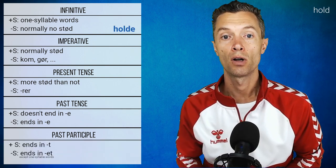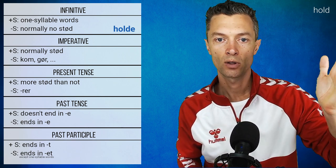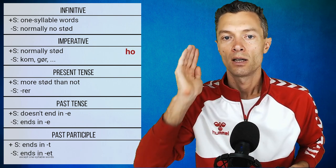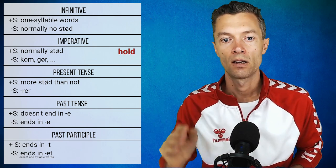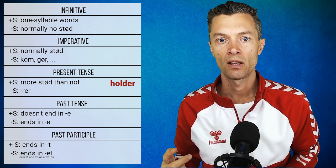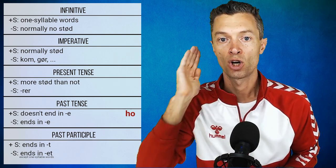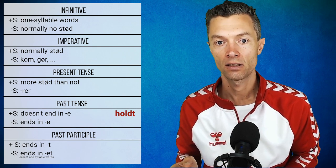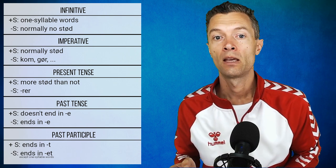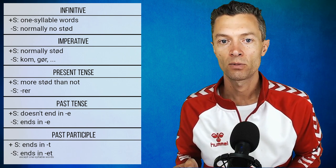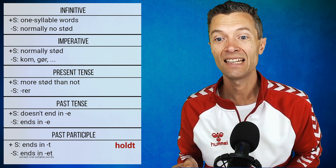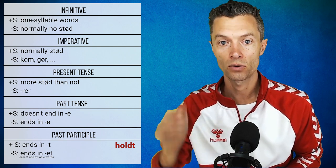Now let's look at the verb 'holde'. Infinitive 'holde' — normally no stød when ending in -e. Imperative 'hold' — with stød. Present tense 'holder'. Past tense 'holdt' — ending in -t, not -e, so there is stød. Past participle 'holdt' — also ending in -t not -et, so there is stød.